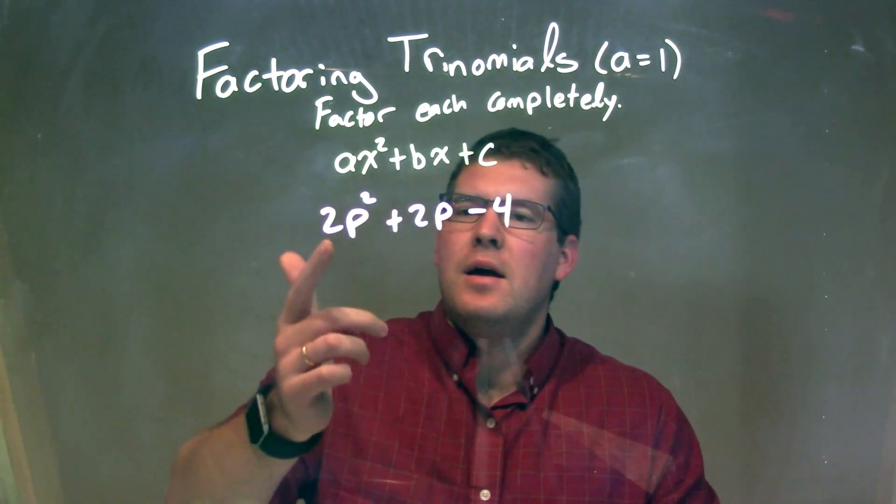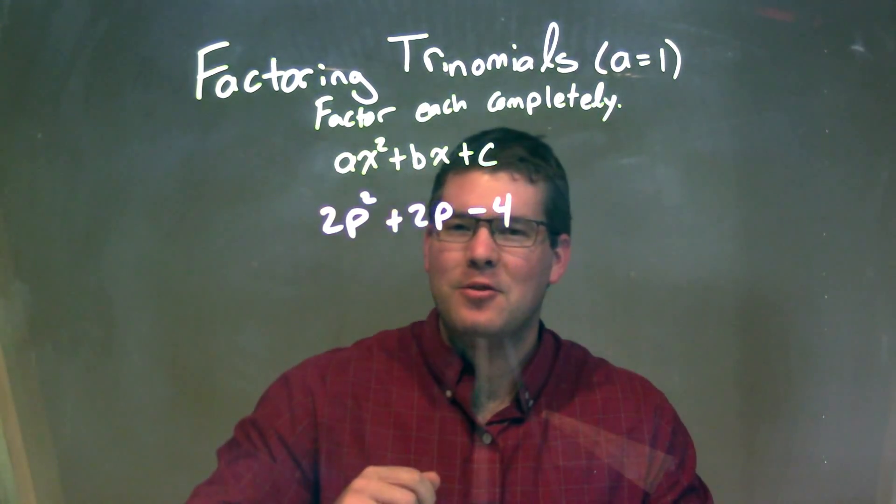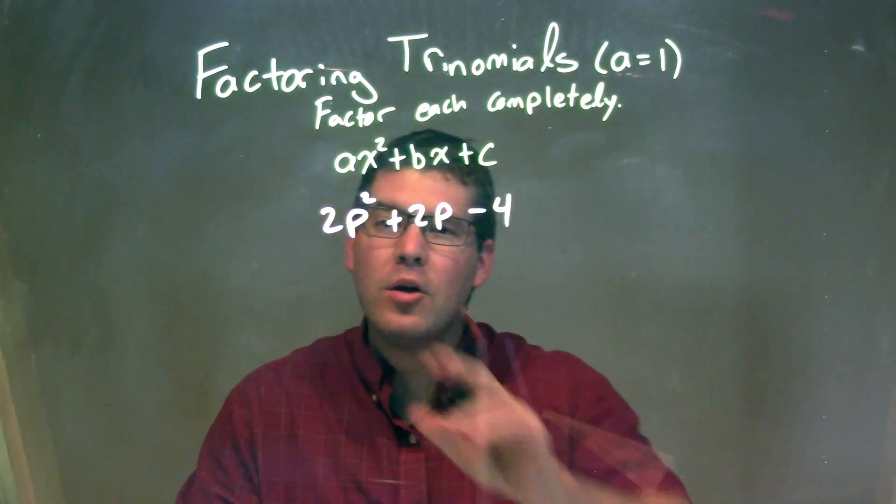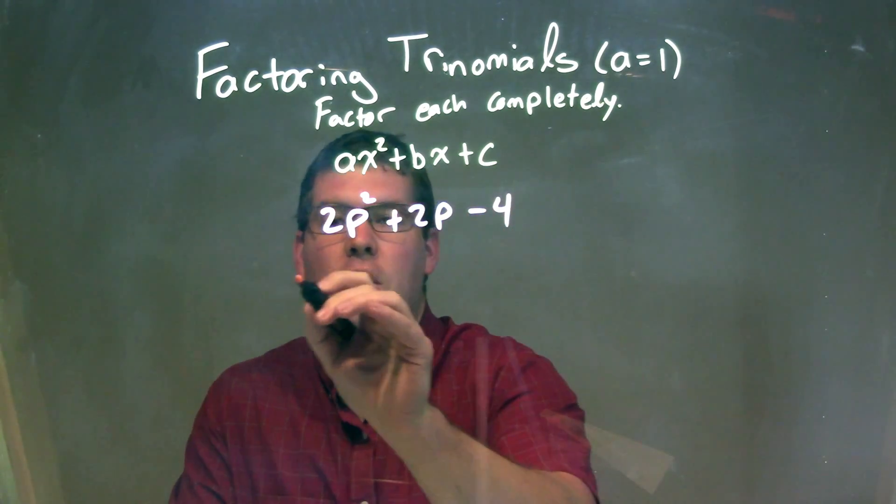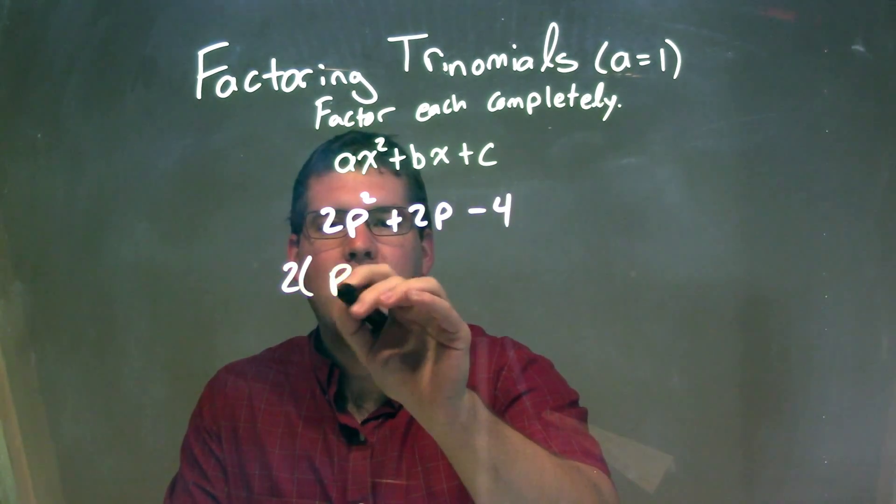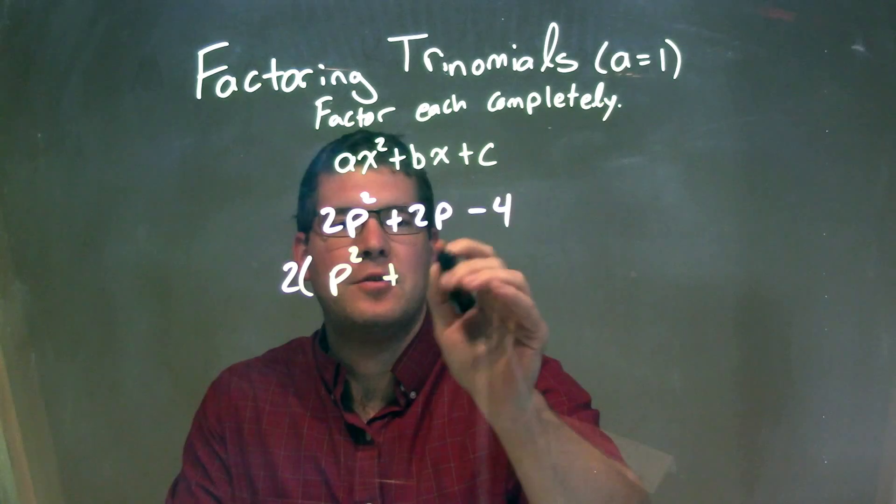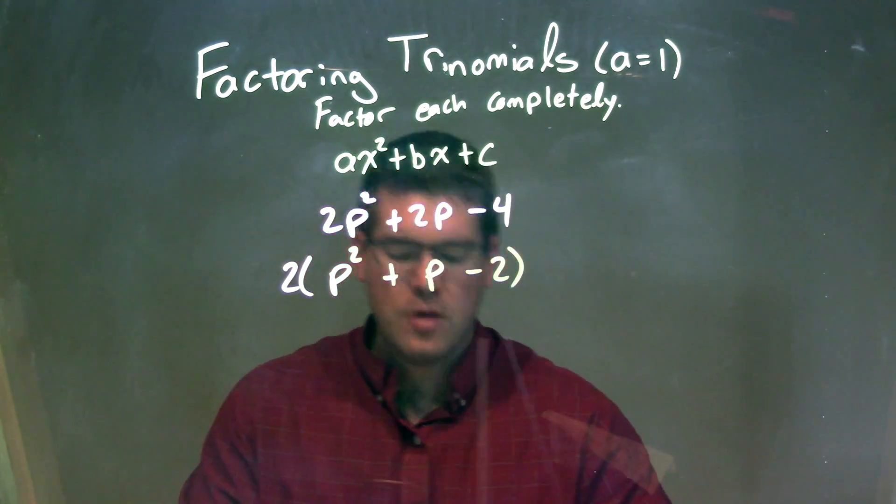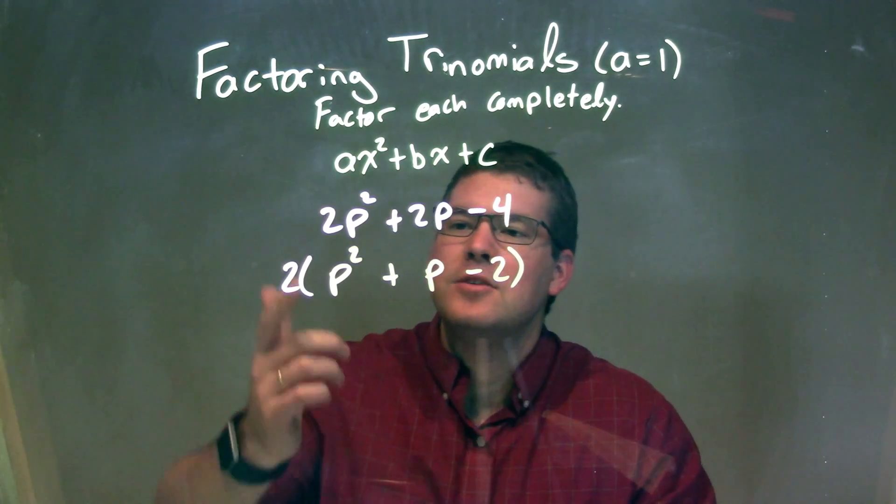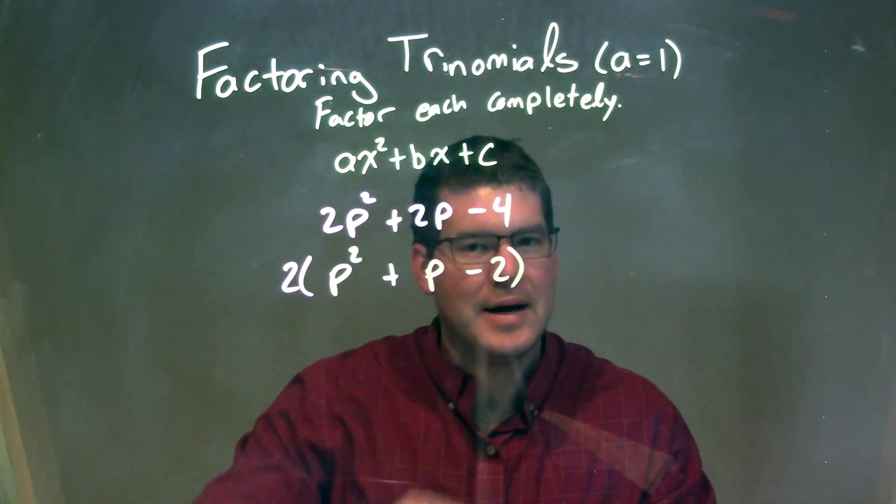I like it better when my a value is 1, the coefficient in front of p squared. But I notice there's a 2 in all terms that I can factor out. So factoring out the 2 gives us 2 times p squared plus p minus 2.